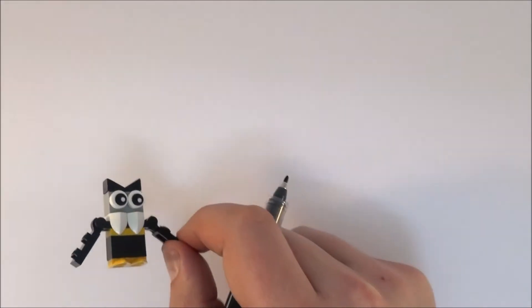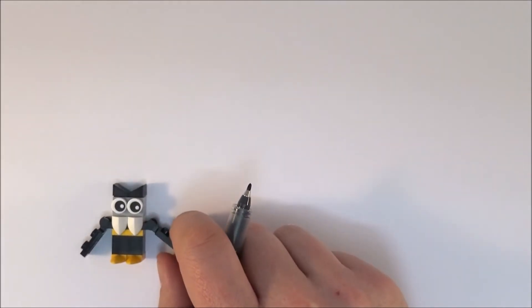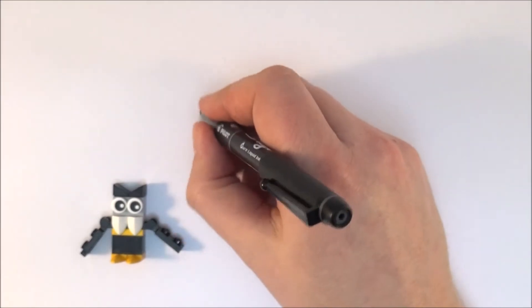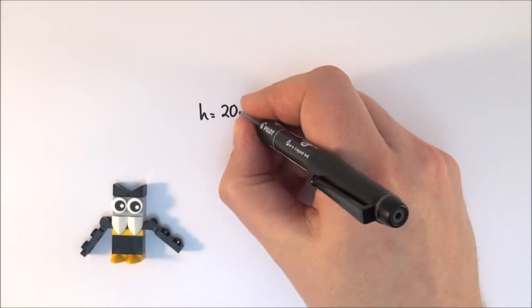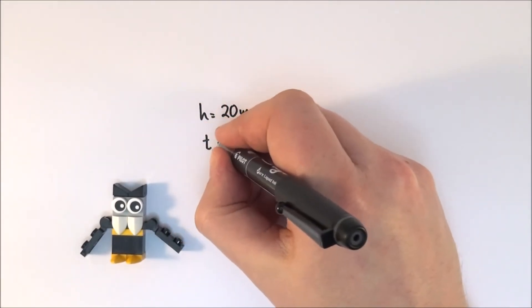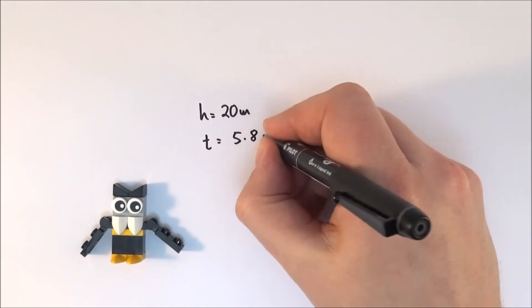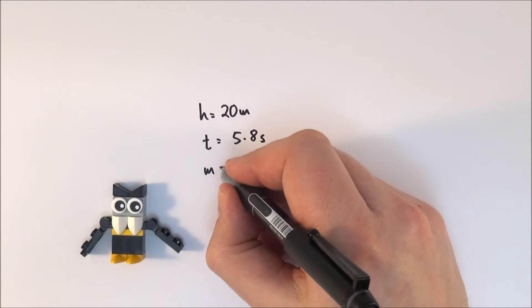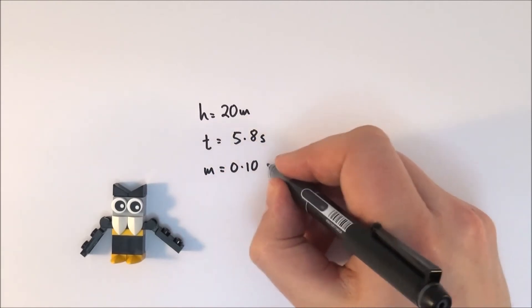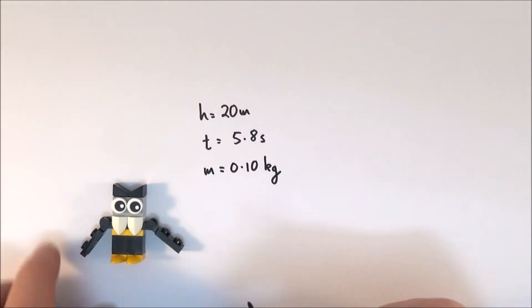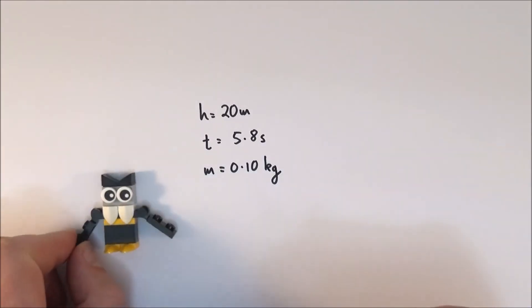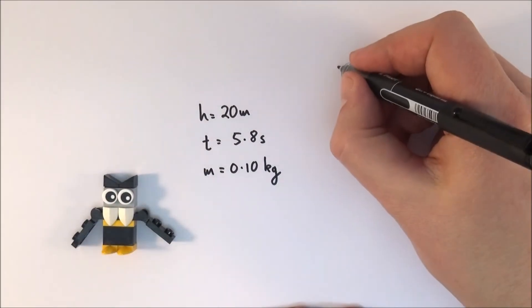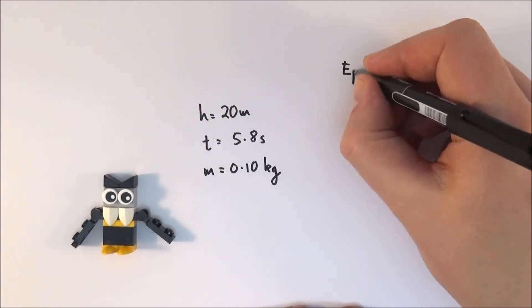Let's consider a nice example. Maybe you've got a bird that flies up into a tree. Perhaps the height of the tree is equal to 20 meters, it takes the bird 5.8 seconds to go that distance, and the mass of the bird is equal to 0.10 kilogram. So what is the average power output of the wings of that bird?